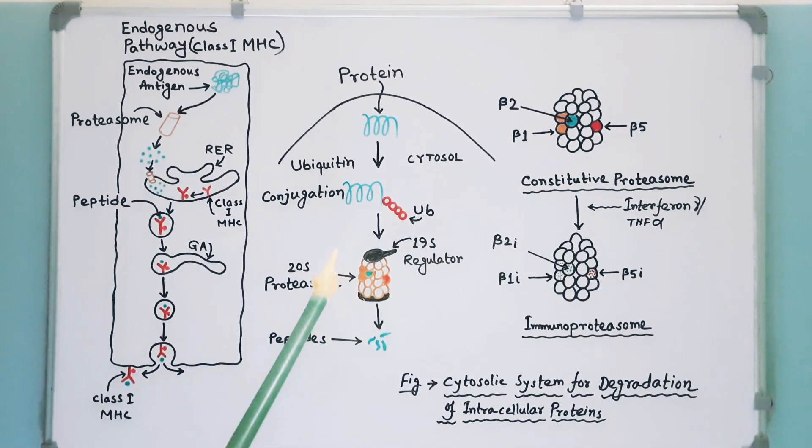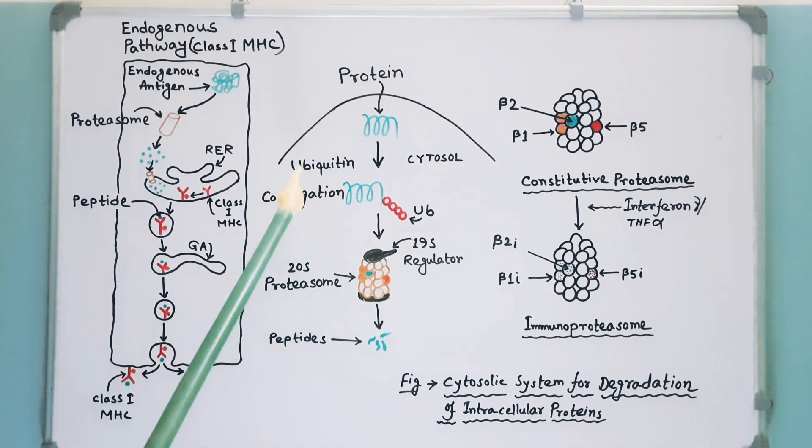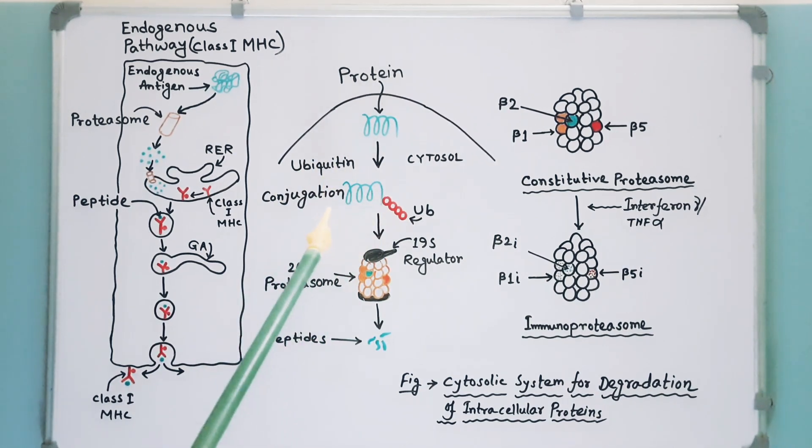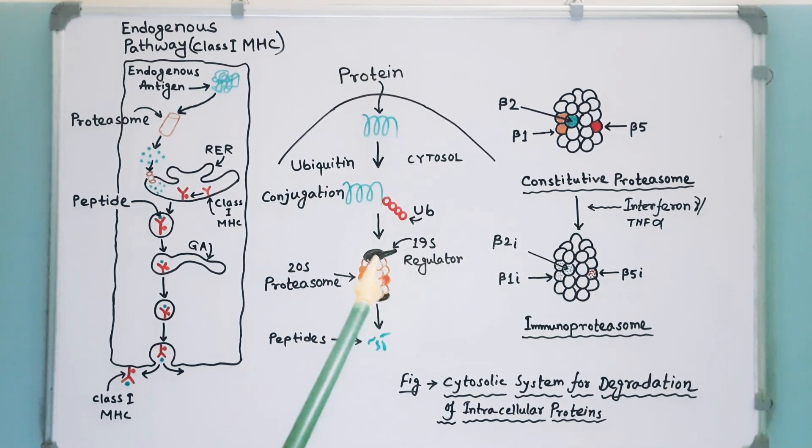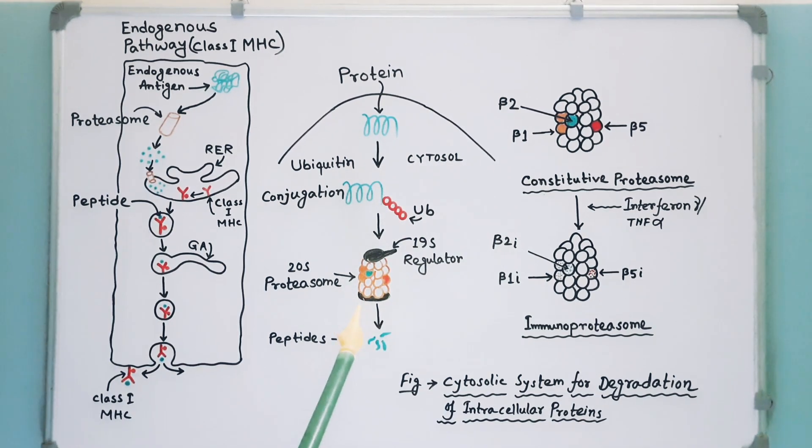Many proteins are targeted for proteolysis when a small protein called ubiquitin is attached to them. These ubiquitin-protein conjugates enter the proteasome complex through a narrow channel at the 19-S end. Next, the proteasome complex clips peptide bonds in an ATP-dependent process.